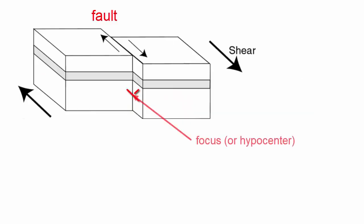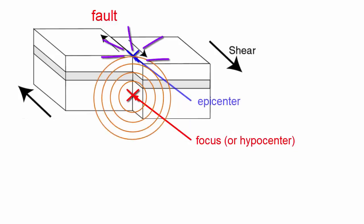The spot along the fault where friction is first overcome and the slip happens is called the focus of the earthquake. The spot on Earth's surface directly above the focus, the place that will first receive the energy waves that emanate out of the focus, is called the epicenter. The energy that is released as the fault slips and the rocks rebound back to their original shape moves in the form of waves that travel outward in all directions.